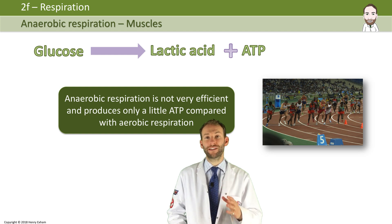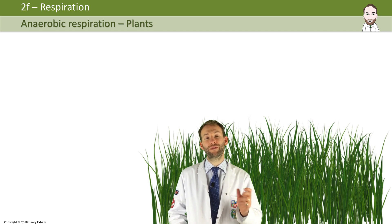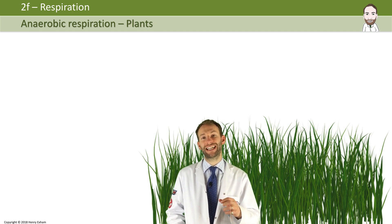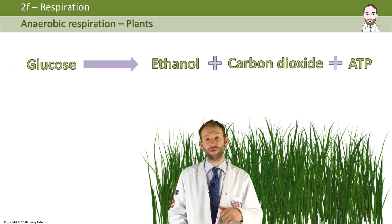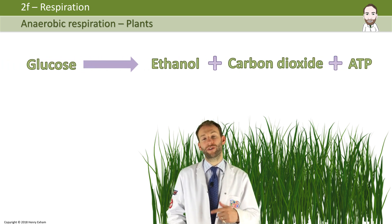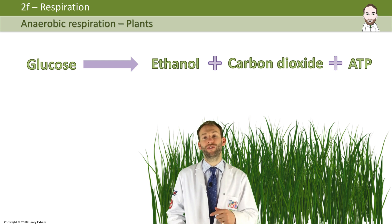Now in plants it's a different reaction. You take the glucose, but instead of breaking it down to lactic acid, plants break it down into ethanol plus carbon dioxide plus ATP. So you get ethanol and carbon dioxide being produced.